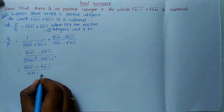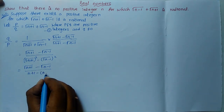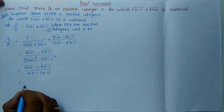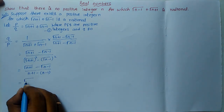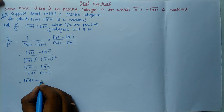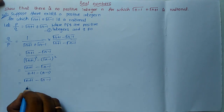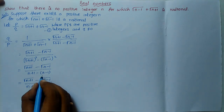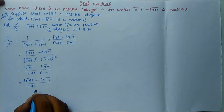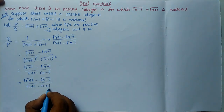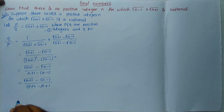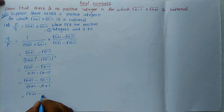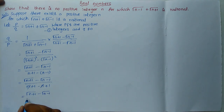The denominator simplifies: (n+1) − (n−1) = n+1 − n+1 = 2. So q/p = (√(n+1) − √(n−1)) / 2.